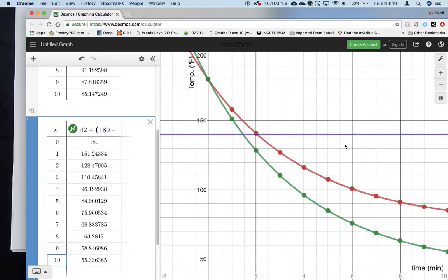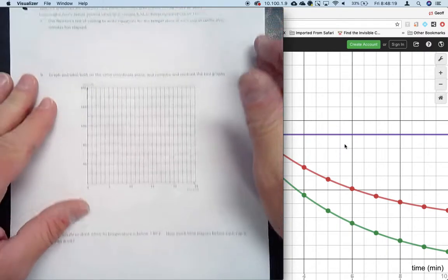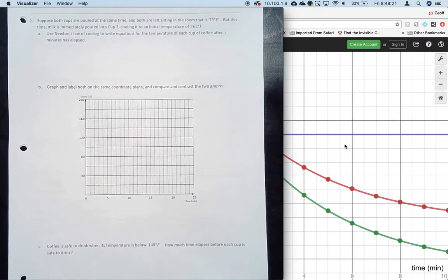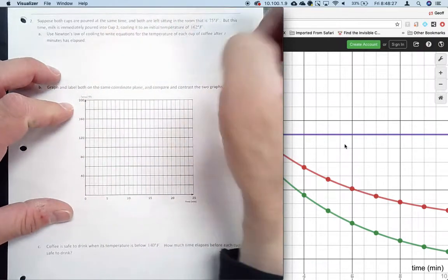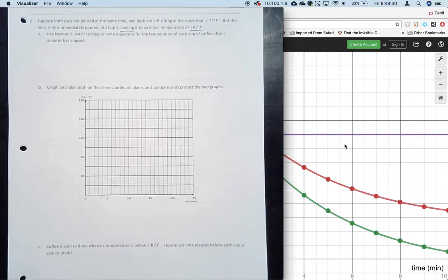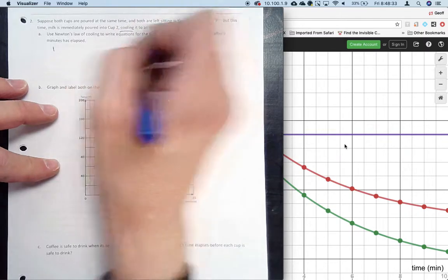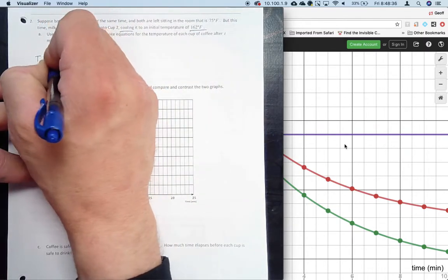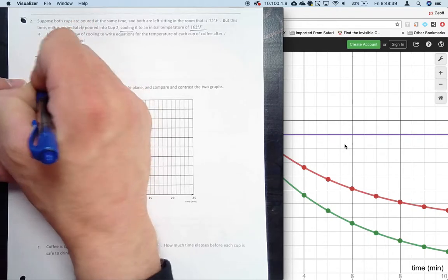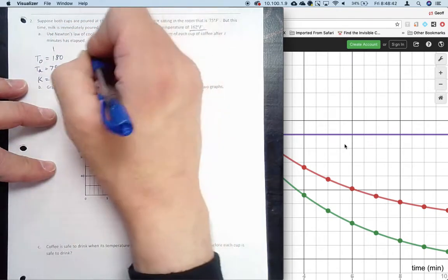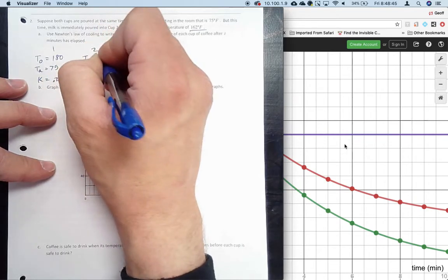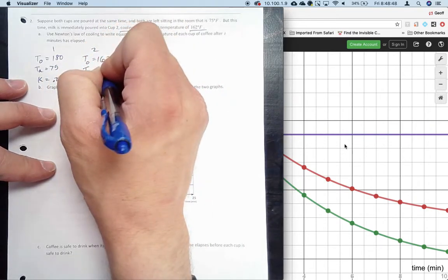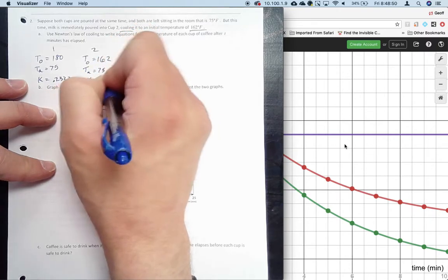Suppose both cups are poured at the same time on page 19. Both are left sitting in the room at 75 degrees, but this time milk is immediately poured into cup 2 and it's cooled instantly to an initial temperature of 162 degrees. For cup 1, T_0 is 180, T_a is 75, K is 0.2337. For cup 2, T_0 is instantly 162, T_a is 75, K is 0.2337.